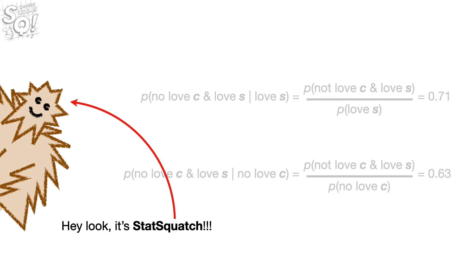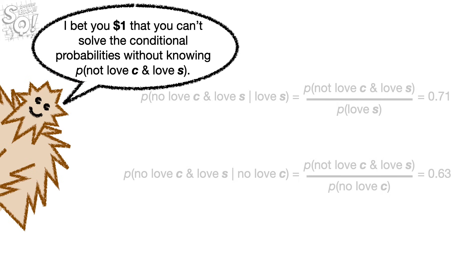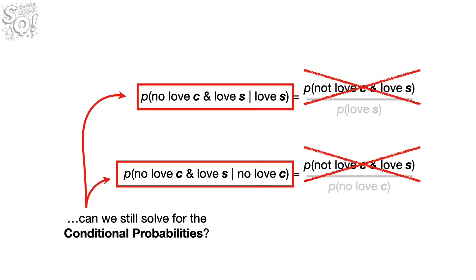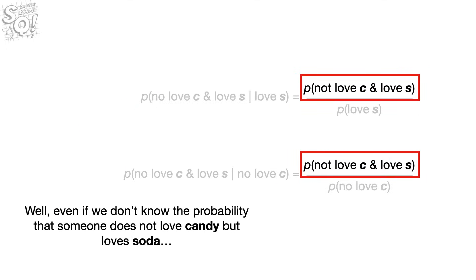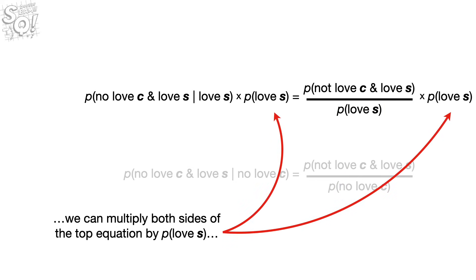Hey look, it's Statsquatch! Statsquatch is our friend in Statland, and he always wants to make a bet. He bets $1 that we can't solve the conditional probabilities without knowing the probability of not loving candy and loving soda. In other words, if we don't know the value for the numerators, can we still solve for the conditional probabilities? Well, even if we don't know the probability that someone does not love candy but loves soda, we can multiply both sides of the top equation by the probability that someone loves soda.